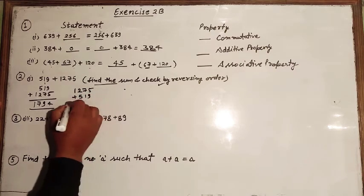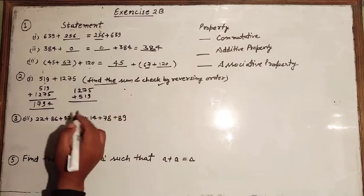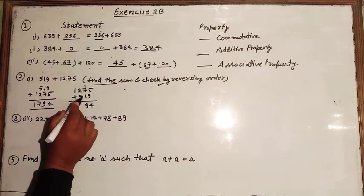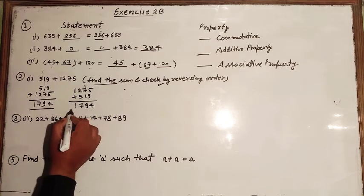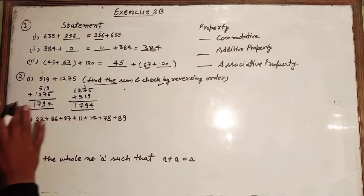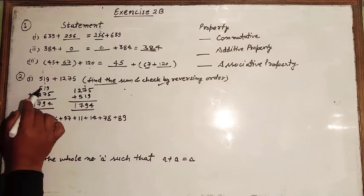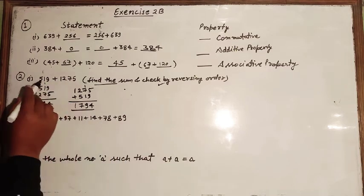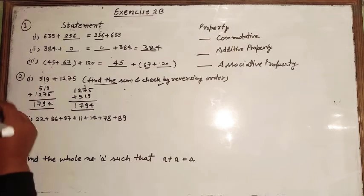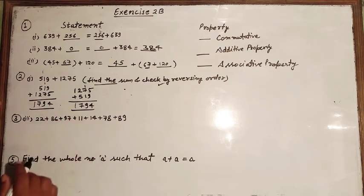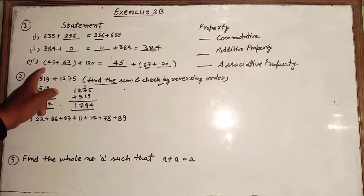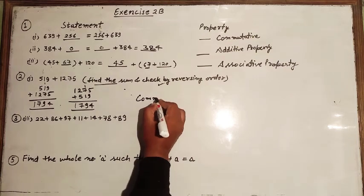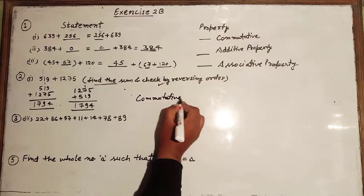Now we reverse the order and write 1275 plus 519. Again 9 plus 5 is 14, carry 1; 7 plus 1 is 8, plus 1 is 9; 5 plus 2 is 7; 1 as it is — sum is 1794. The sum is equal in both cases, confirming the commutative property: a plus b equals b plus a.